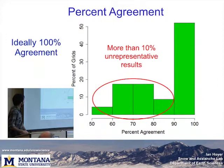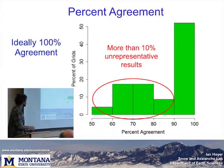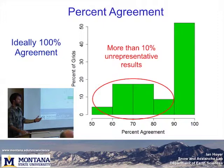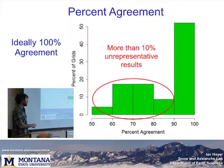So I set it up using percent agreement — 100% means all the tests were the same, either all propagated or all didn't. The 50% mark means half propagated and half didn't. About half the grids I did had less than 90% agreement, meaning more than 10% of the tests were different from the slope as a whole. On those days, the false stable rate was greater than 10% — here I'm seeing a 50% false stable rate.